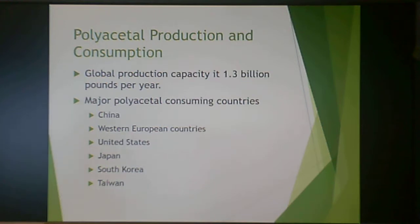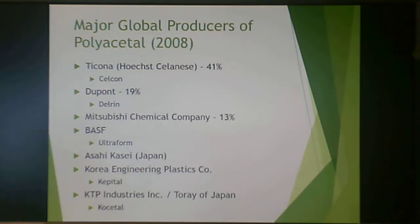Polyacetal production is 1.3 billion pounds per year — much lower than polyethylene's hundreds of thousands of pounds. It is consumed heavily in China, Western Europe, and the United States. Celanese produces the most, at 41%, followed by DuPont at 19%, with other companies producing lower concentrations.